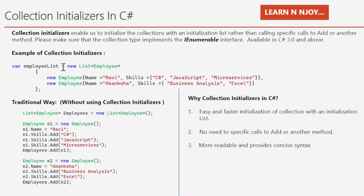Let's understand with an example. I want to create an employee list with two employee details. With collection initializers, we write: empList = new List<Emp> followed by opening and closing curly braces. Inside, I write object initializers — new Emp with curly braces, assigning values to properties: Name equals Ravi, Skills equals C#, JavaScript, Microservices. For the second employee: Name equals Akanksha, Skills equals Business Analysis and Actual. One object is separated from another with a comma.